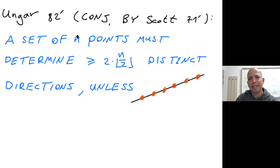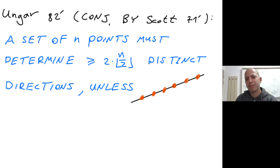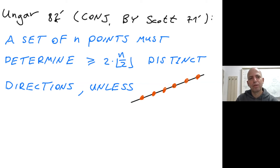Later, people considered: if we have n points that are not collinear, they must determine at least n lines — but what about the number of distinct directions of these lines? It was conjectured by Scott in 1971: what is the minimum number of distinct directions of lines determined? We count parallel lines as just one direction. Scott made two conjectures — one in the plane, another in 3-space. This was proved by Ungar in 1982.